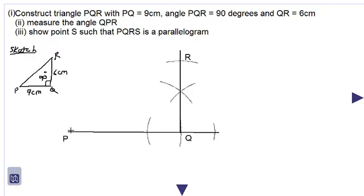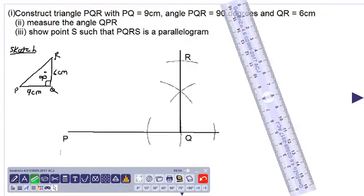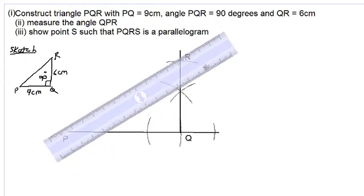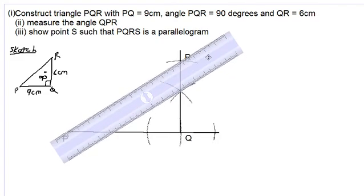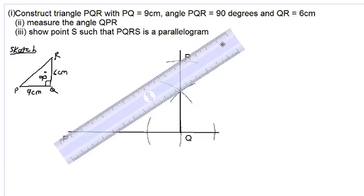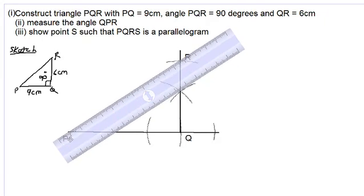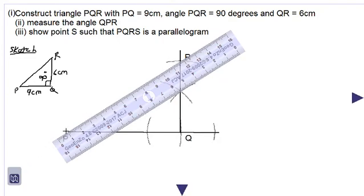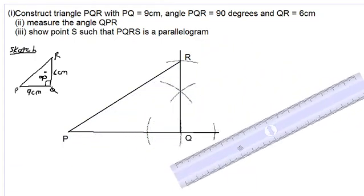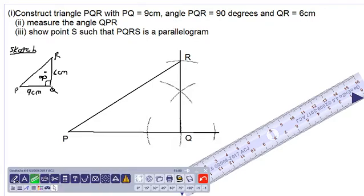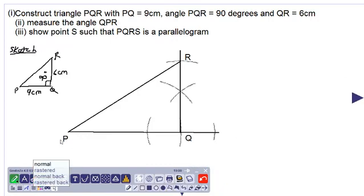Now we can connect point P to point R with our long ruler, as accurately as possible. So we have constructed our triangle PQR as we were asked to do. Now we are asked to measure the angle QPR, so let us locate that angle. QPR is right here.